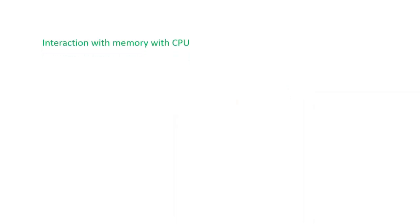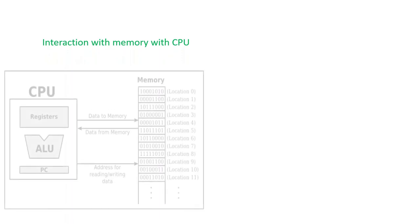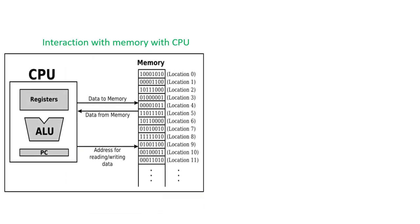Interaction with memory with CPU. Two main elements to execute a program are CPU and main memory. In order to read or write data from the memory, CPU generates an address. By using this address we can fetch or write the data to the memory. The main memory is an array of bytes and every location is represented with an address.